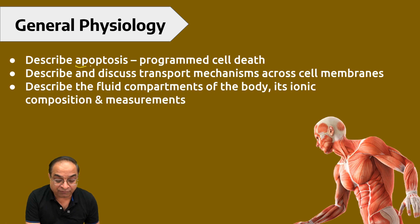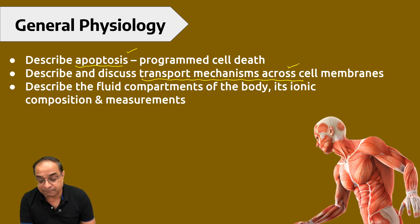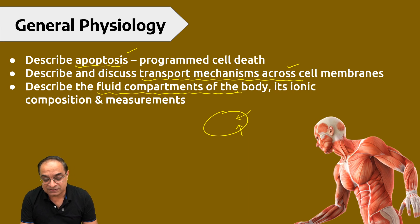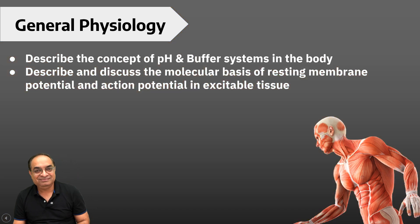Next topic is apoptosis, that is programmed cell death. Then next topic is the transportation across cell membrane—how substances are being transported across the cell, active transportation, primary active, secondary active, then passive transportation, diffusion and osmosis. All those things will be discussed in this topic. Another interesting topic is the fluid compartments of the body, the ionic composition, and the mechanism of measurement—how do we measure intracellular fluid and how do we measure extracellular fluid, interstitial fluid, plasma, the composition. All those things will be discussed in this topic, that is fluid compartments of the body.